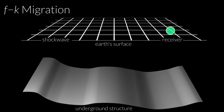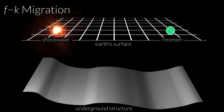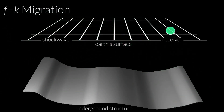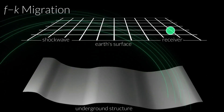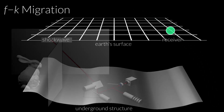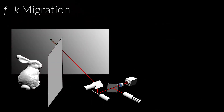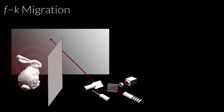In seismology, FK migration is used to map out the structure of underground surfaces. An explosion generates shockwaves which scatter off of underground structures and are then recorded by geophones at the surface. Here, the shockwave is analogous to the wavefront of light in optical non-line-of-sight, which propagates outwards from each illuminated point on the wall.